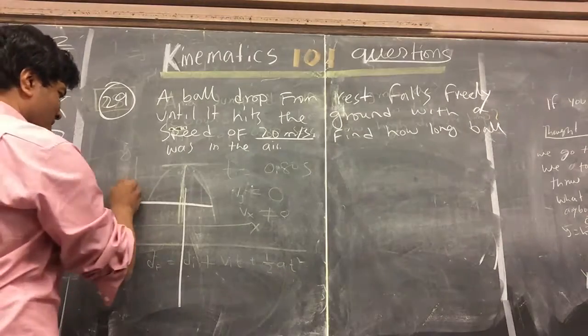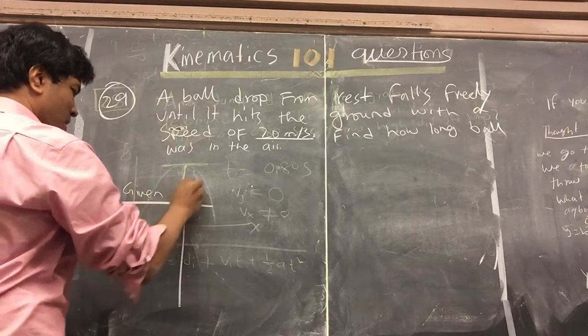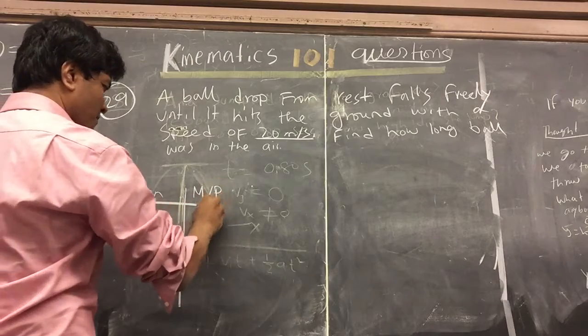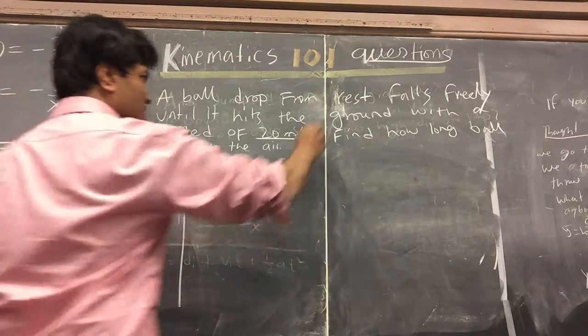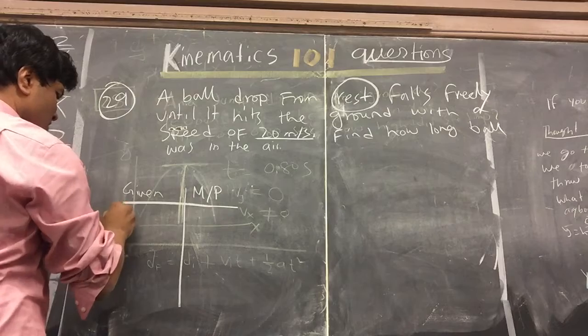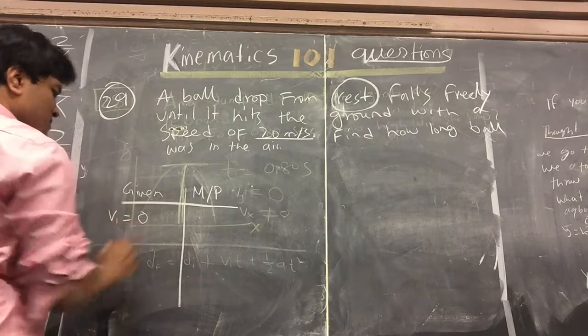Rest, given. Math and physics. So rest is velocity initial. Velocity initial is, of course, zero.